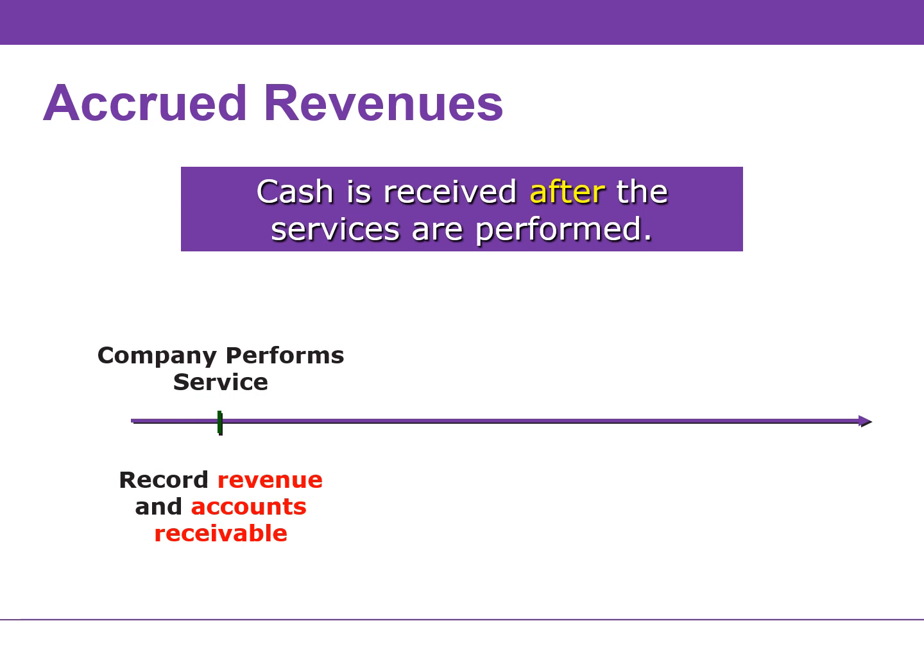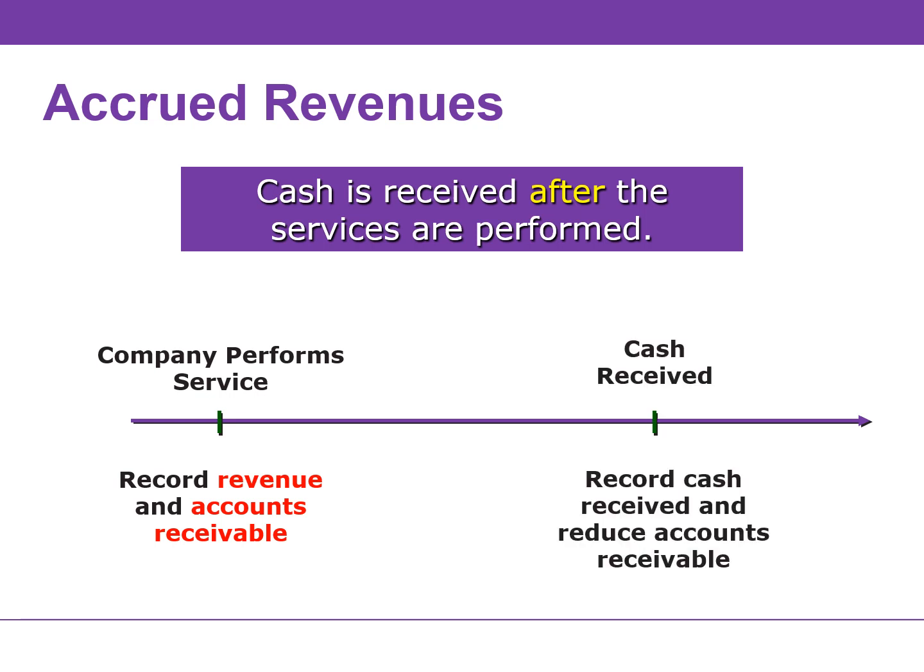Accounts receivable represent the amount customers owe us — I like to think of it as an IOU. When the company collects cash from the customers, we record the cash received as an increase and we decrease the accounts receivable. We do not record revenue, but rather it's simply an exchange between two assets.